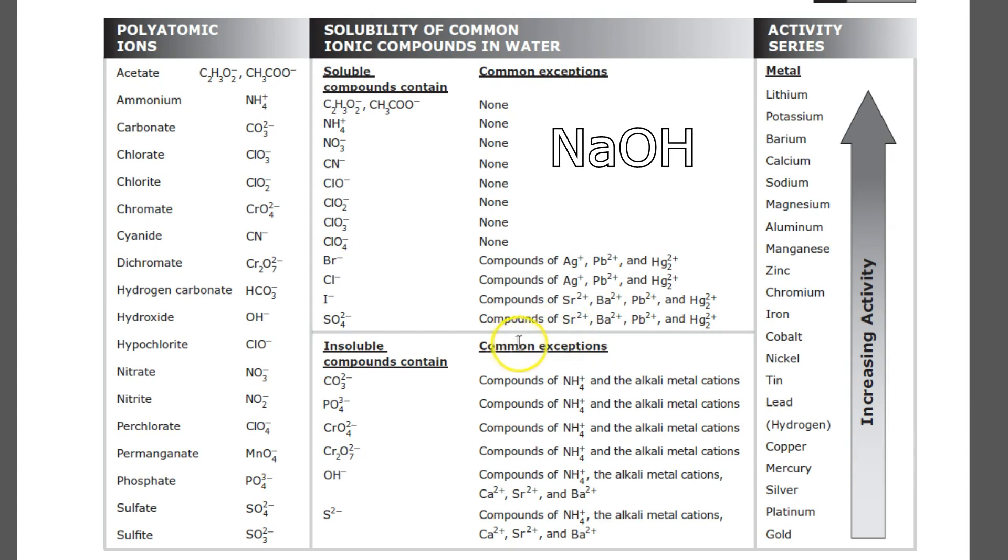One more example, sodium hydroxide. So hydroxide is down here on the insoluble half. And it is insoluble except when bonded to NH4, the alkali metals, and calcium, strontium, and barium. Well, sodium is in group one. It's an alkali metal. So it is an exception. So instead of being insoluble, sodium hydroxide is soluble. And that's how it's done. It's really quite simple.